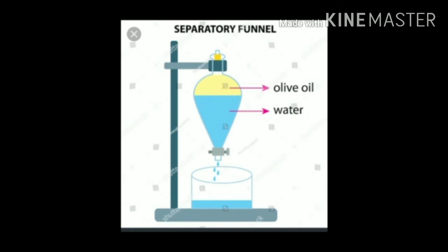When two liquids are immiscible they can be easily separated with a separating funnel. The principle is that immiscible liquids separate into layers depending on their densities. Applications: used to separate a mixture of oil and water, to separate some organic compounds present in aqueous solution, and in the extraction of iron during metallurgy — the lighter slag is removed from the top by this method, leaving molten iron at the bottom of the furnace.